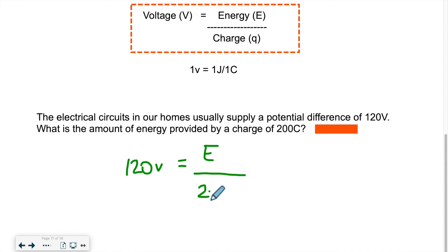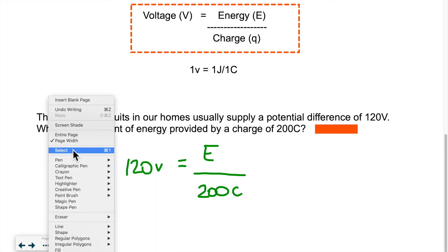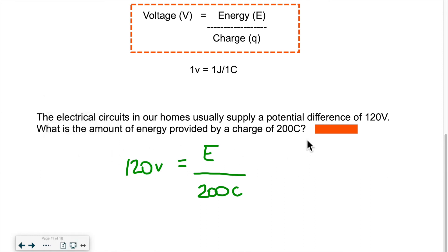What energy is provided by 200 Coulomb of charges if the house has a voltage of 120. Obviously I will multiply 200 by 120 to get the energy, the corresponding energy, and that would be 24,000 joules.